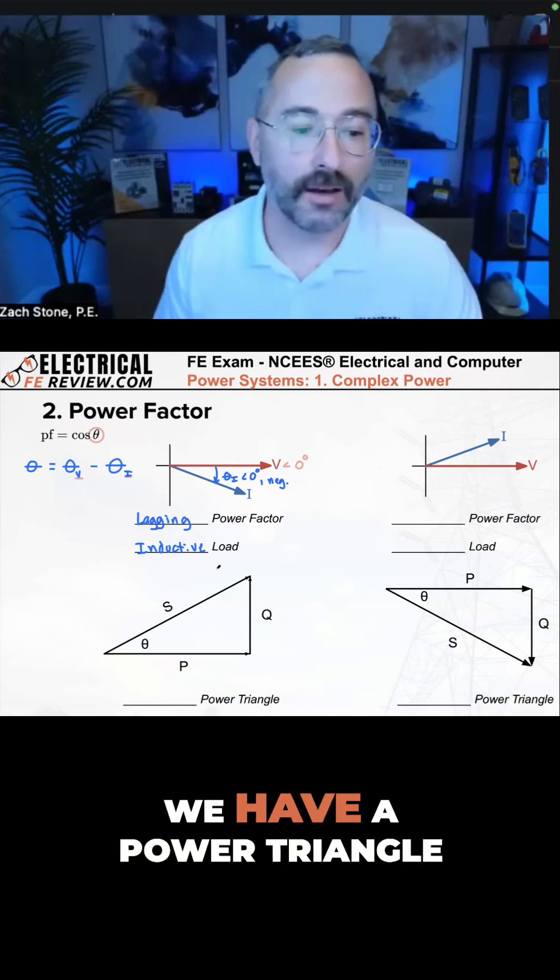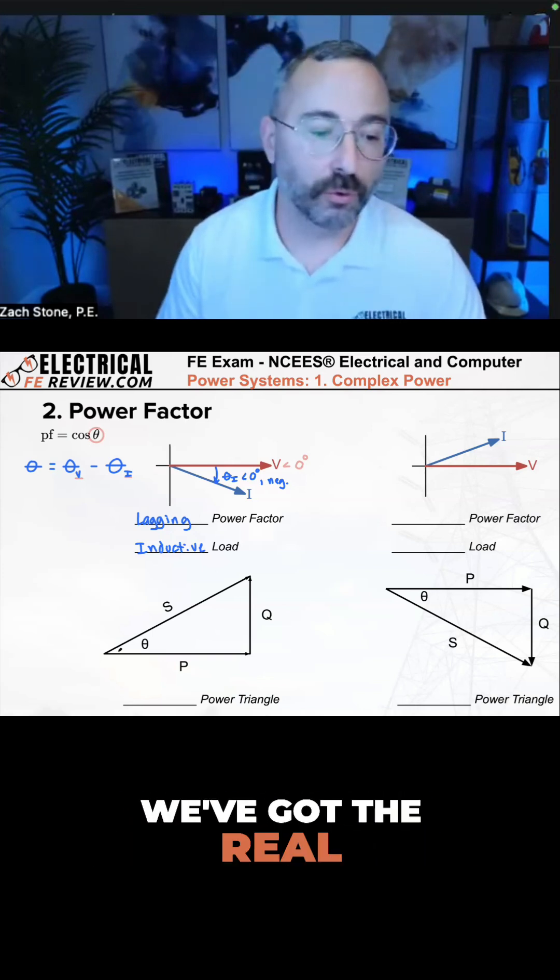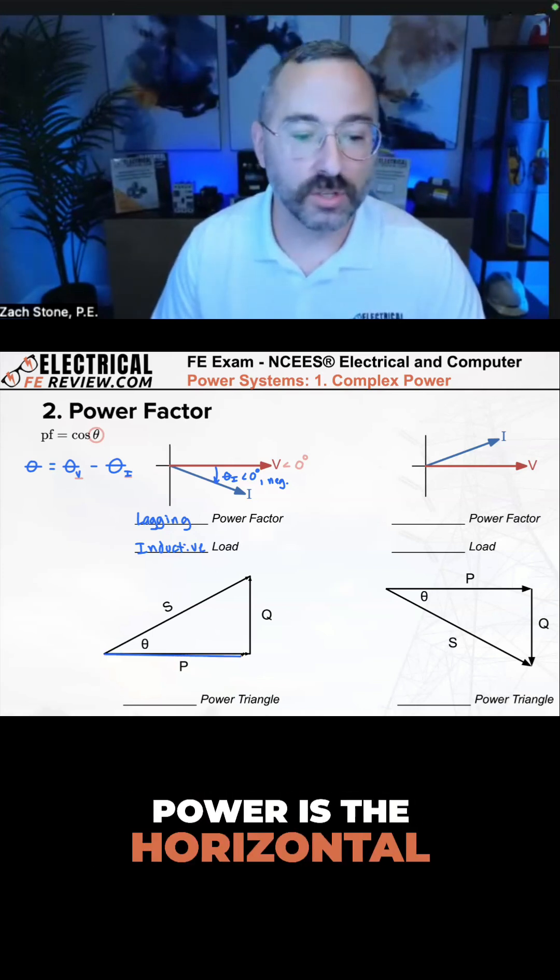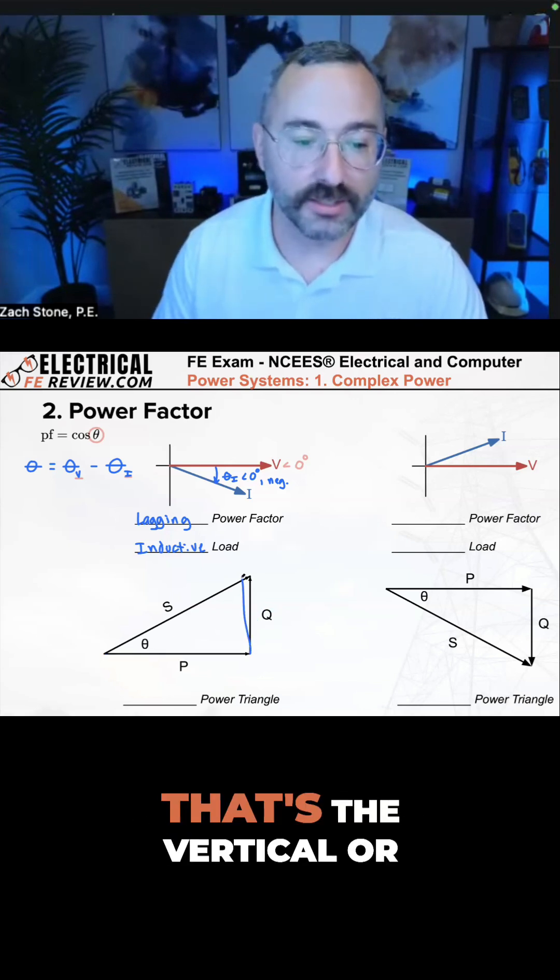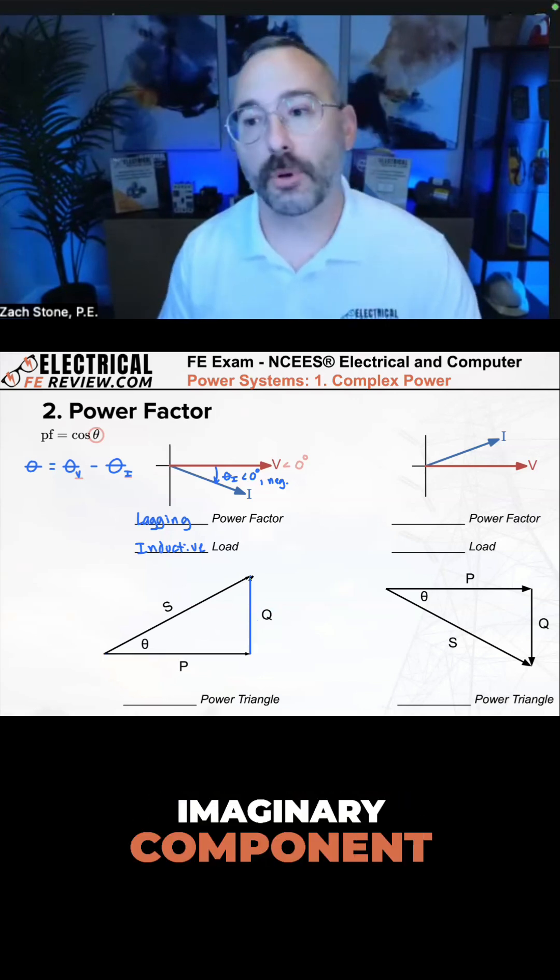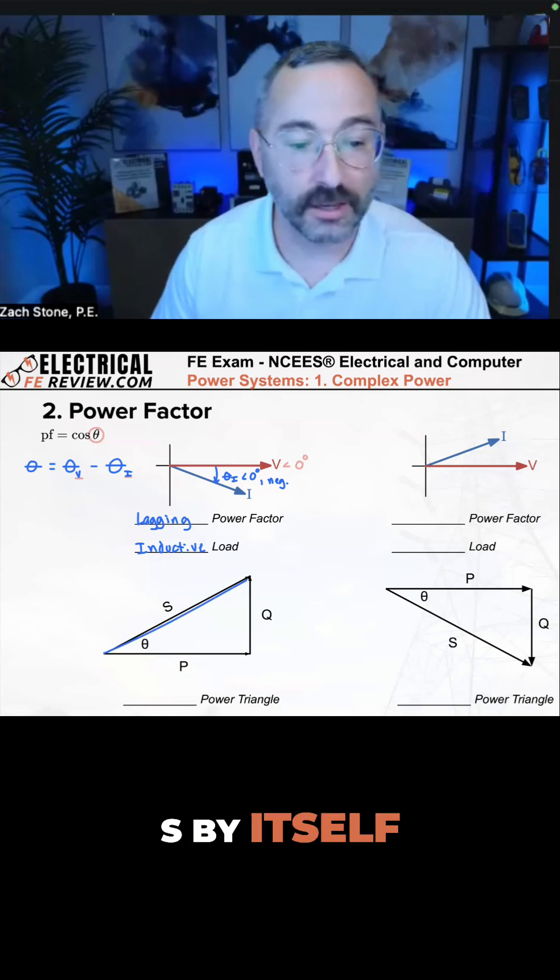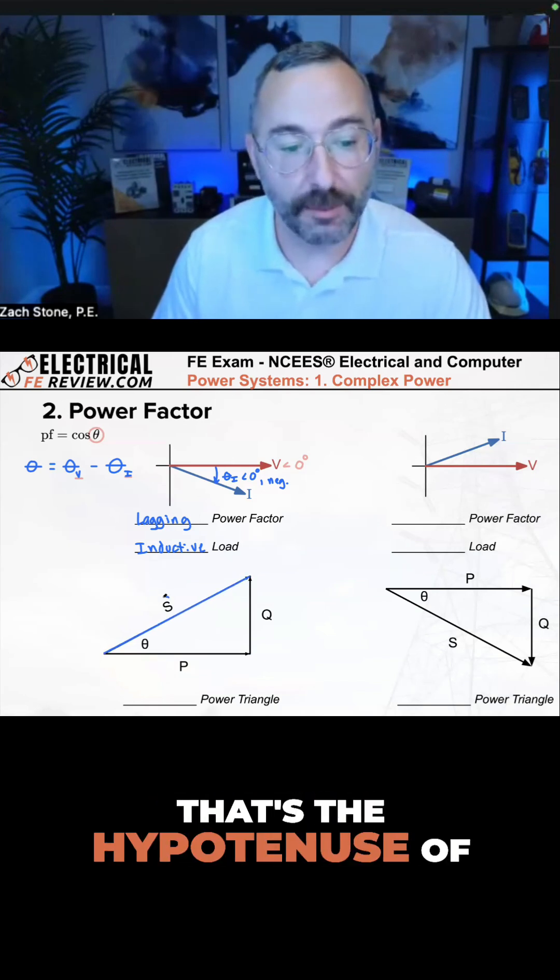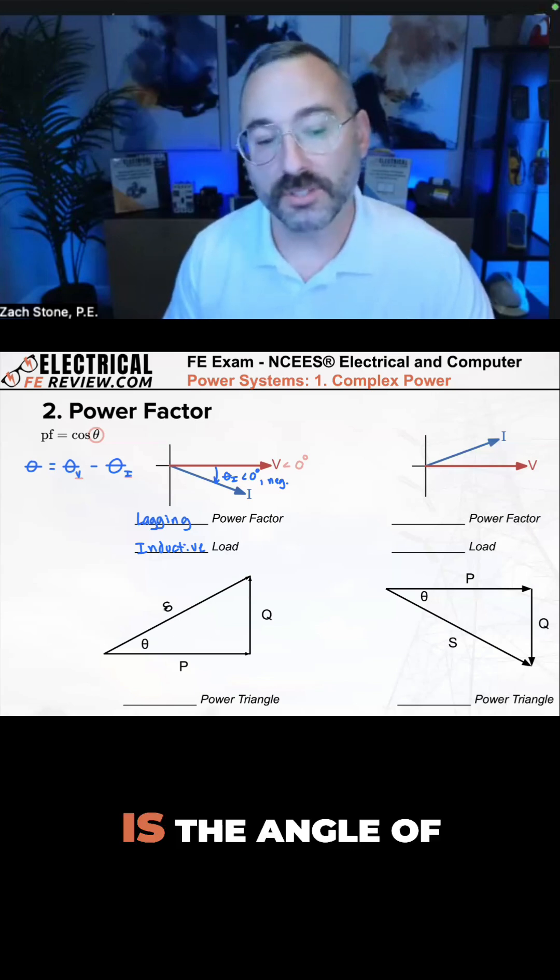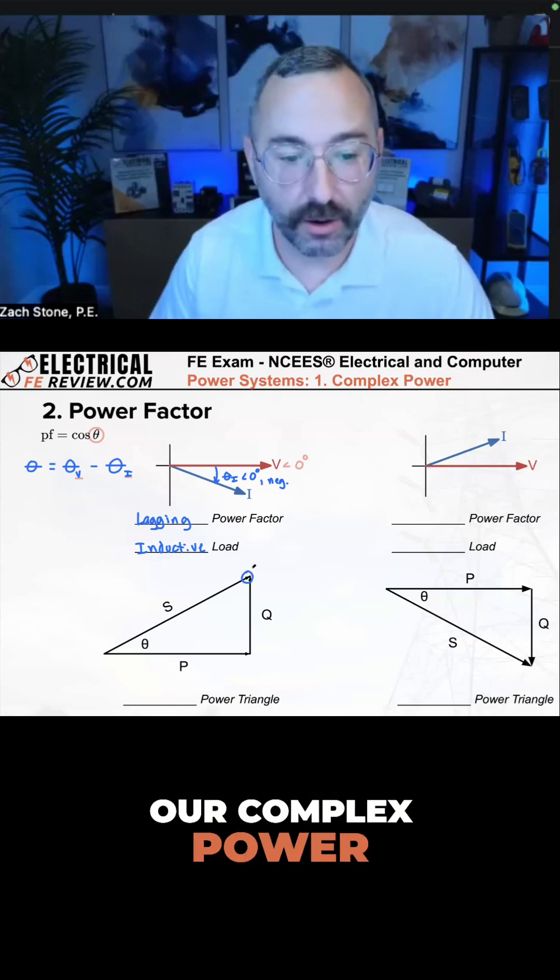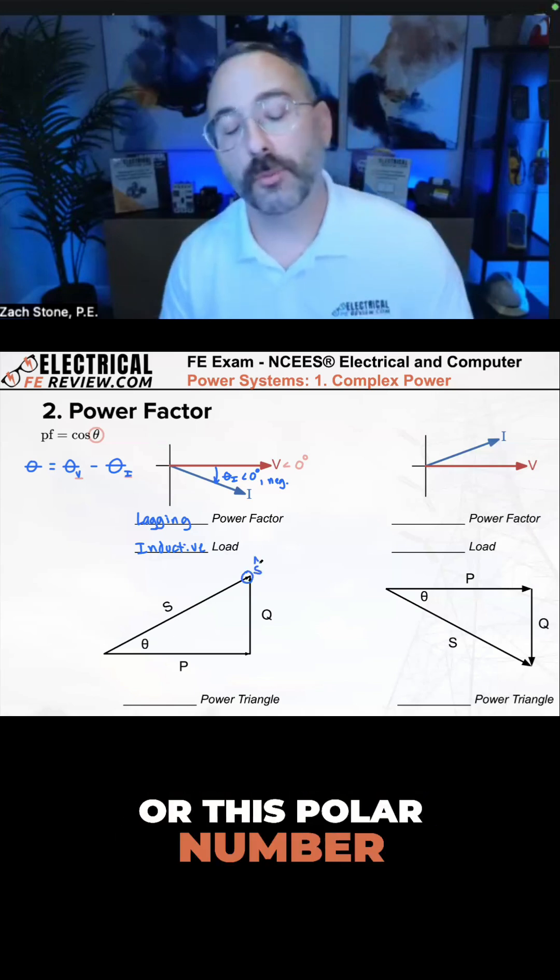Beneath this phasor diagram, we have a power triangle. We've got the real power as the horizontal or real component. The reactive power Q, that's the vertical or imaginary component. Apparent power S by itself, just the magnitude, that's the hypotenuse of this triangle. And then here's theta. Theta, of course, is the angle of our complex power, this angle, or this polar number right here.